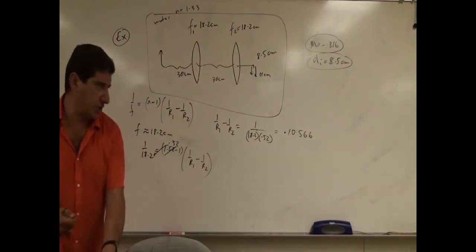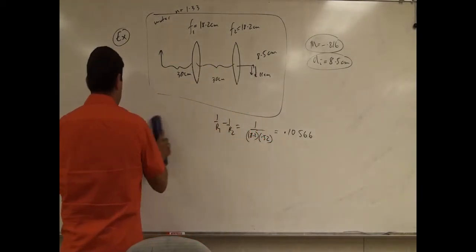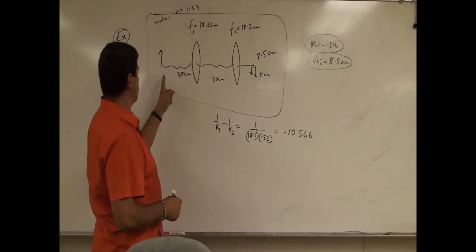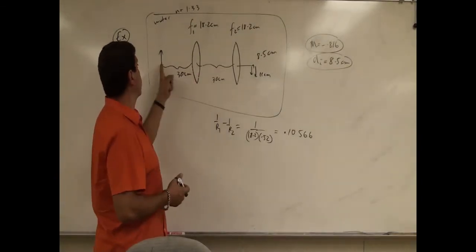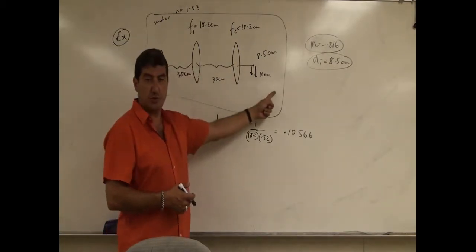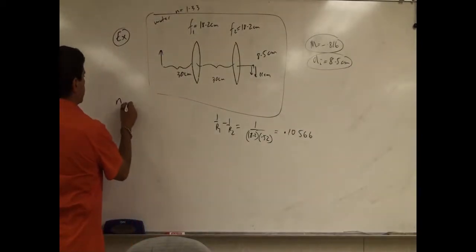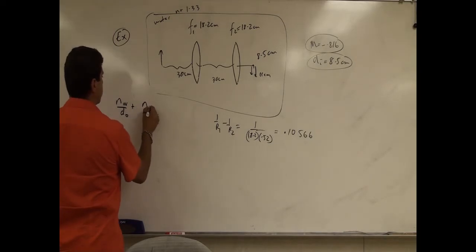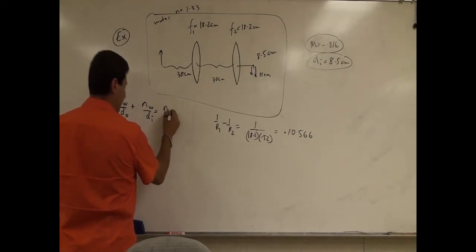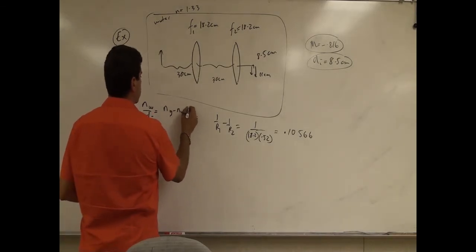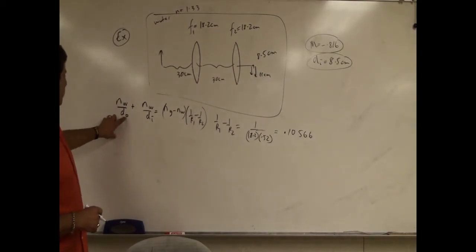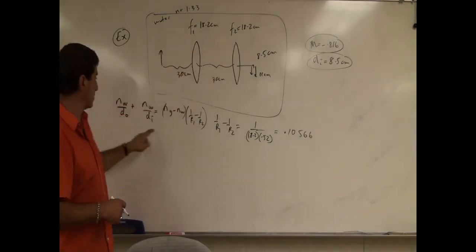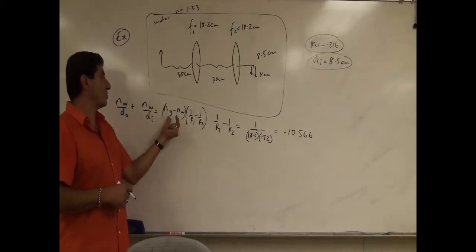If I immerse the system in water, how do the equations change? The object is located in water, the glass has a different index of refraction, and the image is also produced in water. So the generalized equation becomes: index of refraction of water over dO plus index of refraction of water over dI equals (index of refraction of glass minus index of refraction of water) times (1 over R1 minus 1 over R2). The object is in water, so you use n_water on the left; then you put N_glass minus N_water on the right.